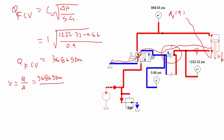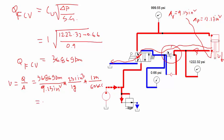In the problem, the rod-end fluid area is given as 9.13 square inches and the piston area is given as 12.17 square inches. I plug in 9.13 square inches, then convert gallons per minute: one gallon equals 231 cubic inches and one minute equals 60 seconds. I calculated 15.54 inches per second, which converts to 1.295 feet per second. That is the extension velocity.